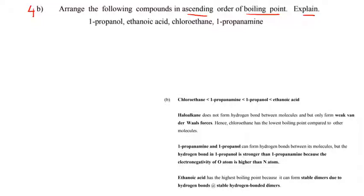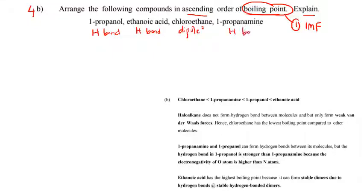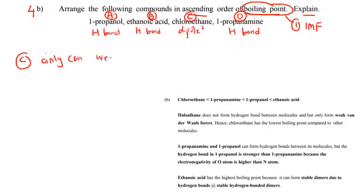Let's continue with tutorial question 4b: arrange the following compounds in ascending order of boiling point and explain. The compounds are 1-propanol (A), ethanoic acid (B), chloroethane (C), and 1-propanamine (D). First, identify the intermolecular forces: 1-propanol — hydrogen bond; ethanoic acid — hydrogen bond; chloroethane — dipole-dipole forces; 1-propanamine — hydrogen bond. It is clear that chloroethane C has the lowest boiling point because it can only form dipole-dipole and London dispersion forces.